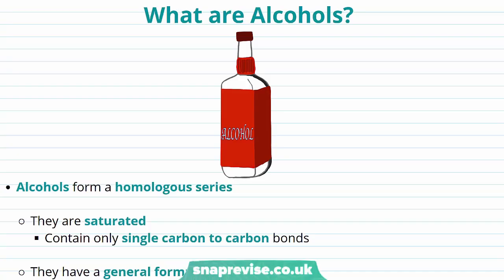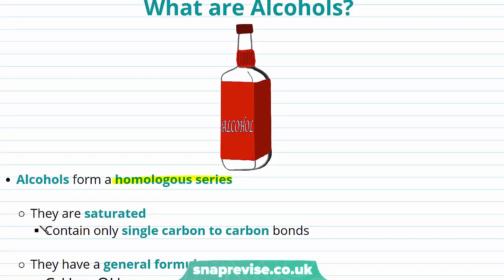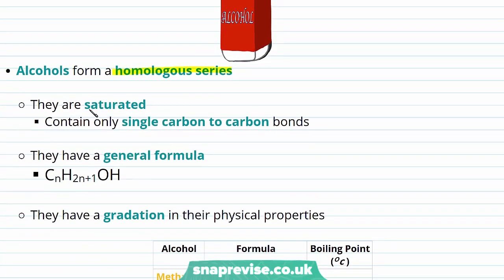Let's begin by discussing what are alcohols, where alcohols form a homologous series. Our alcohols are saturated, and what we mean by this is that they contain only single carbon to carbon bonds. Our alcohols have a general formula, and this general formula is CnH2n+1OH. We'll take a look at some alcohols and see how their formula fits the general formula in just a second.